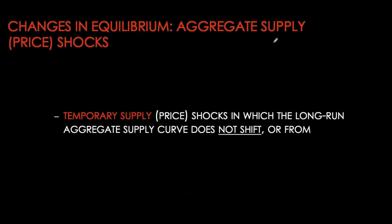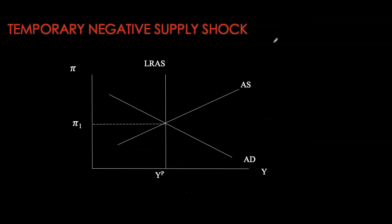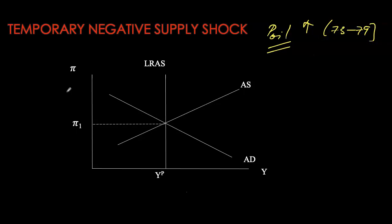Aggregate supply shocks can be temporary or permanent. Temporary supply shocks only shift the short-run AS curve — they could come from changes in inflation expectations or supply/inflation shocks. Permanent supply shocks affect potential GDP, shifting the long-run AS as well. A temporary negative supply shock — for example, oil prices rising sharply as we saw from 1973 to 1979 — causes the short-run AS to shift to the left or up, resulting in higher inflation and lower GDP.